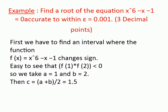Let us see an example. Find the root of the equation x⁶ − x − 1 = 0, accurate to within an error of 0.001, that is up to three decimal places. First, write the given function as f(x) = x⁶ − x − 1. Consider two initial guesses: a = 1 and b = 2. We check that f(a) × f(b) < 0 — after computing f(1) and f(2), their product is indeed less than zero, so a = 1 and b = 2 are valid initial guesses. Then c = (1 + 2) / 2 = 1.5.